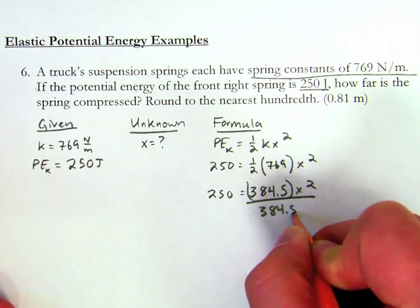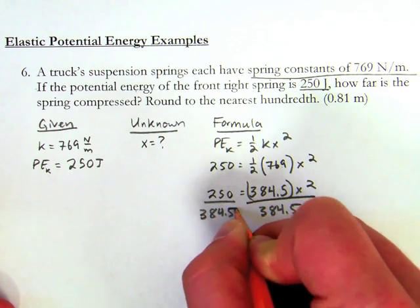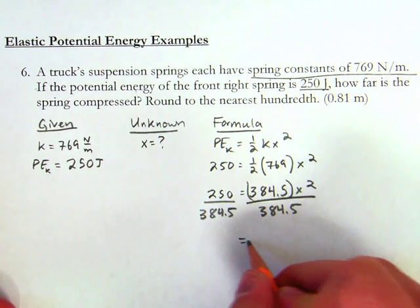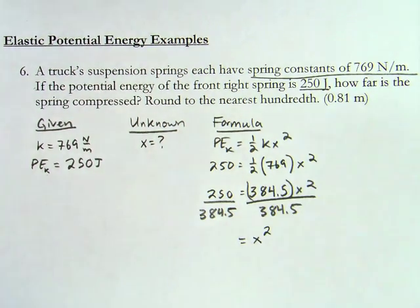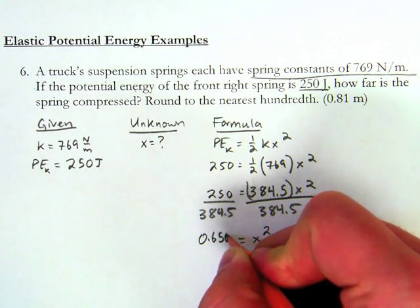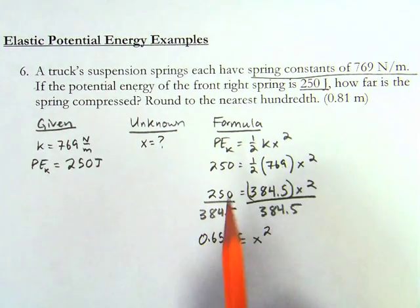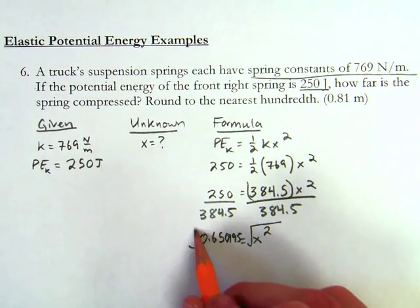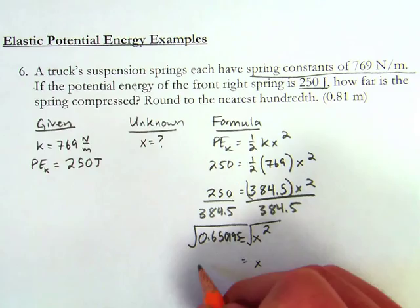250 divided by 384.5 is going to be 0.650195, and I don't want to round yet. I don't want to round until the end of the problem. So I take the square root of both sides, and I'm left with x equals 0.81 meters.